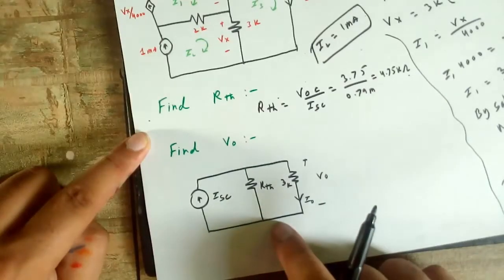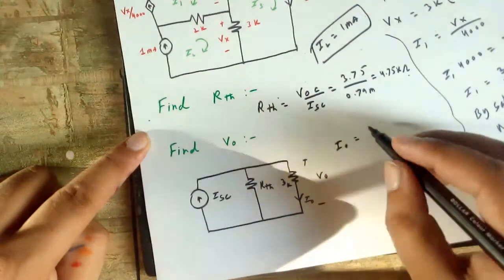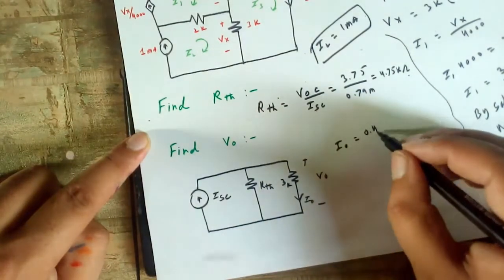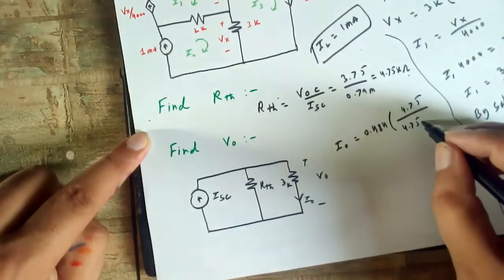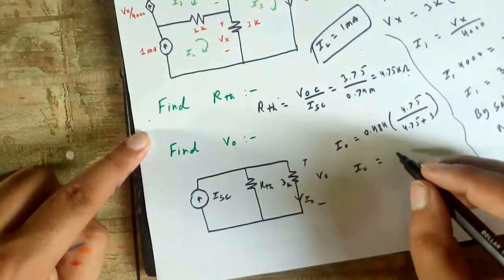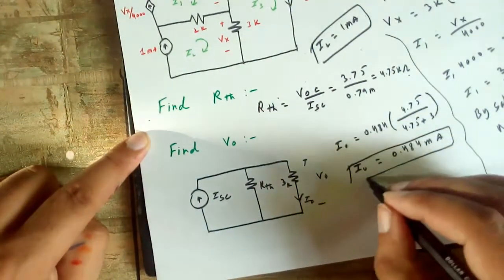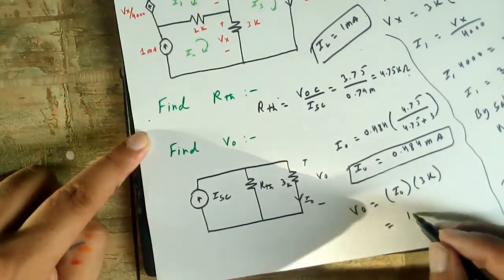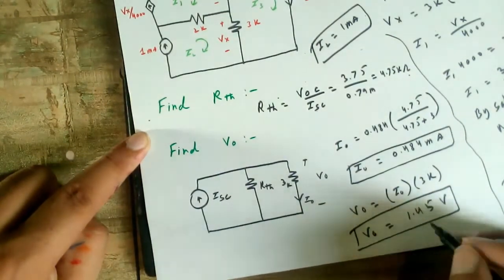Now you can see this is the Thevenin equivalent circuit. We want to find I0. I0 can be found by the voltage divider rule: 0.484 times 4.7k over (4.7k plus 3k) gives I0 equal to 0.84mA. So V0 equals I0 times 3k, which equals 1.45V. This is our answer.